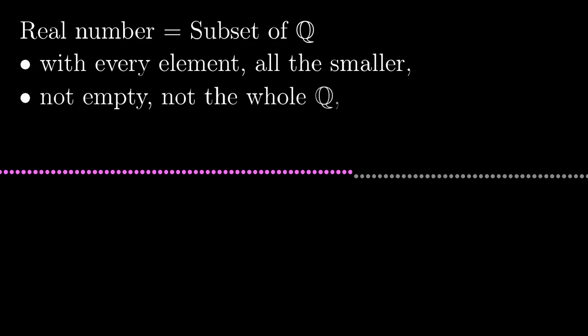All the other conditions for a real number are only to exclude certain special cases. In particular, it cannot be an empty set or the set of all the rational numbers. And it also shouldn't contain its largest element. Sure, with these dots, it looks that the largest element is just the last dot, but we don't see plenty of other rational numbers in between.